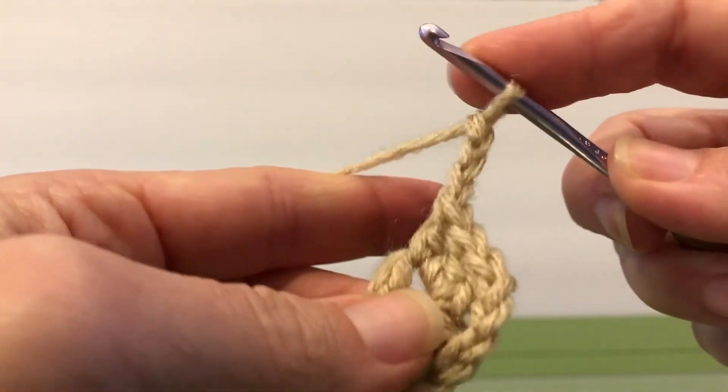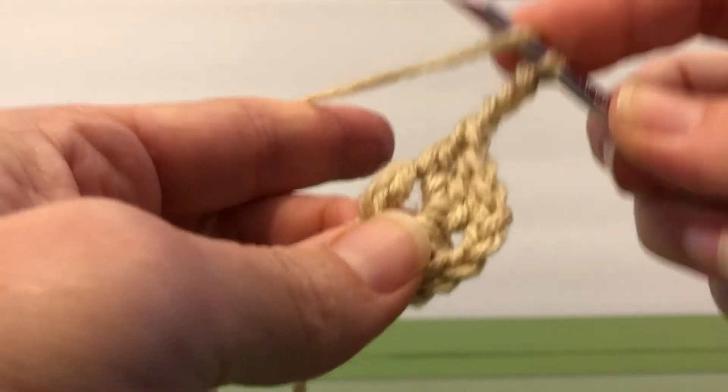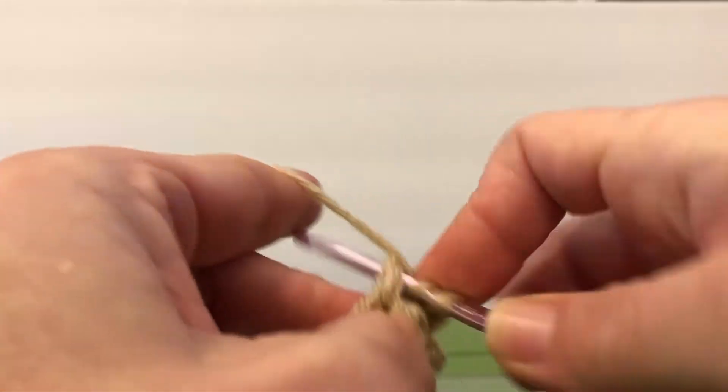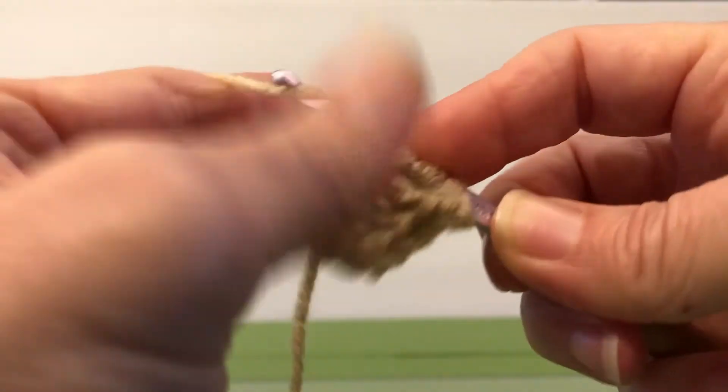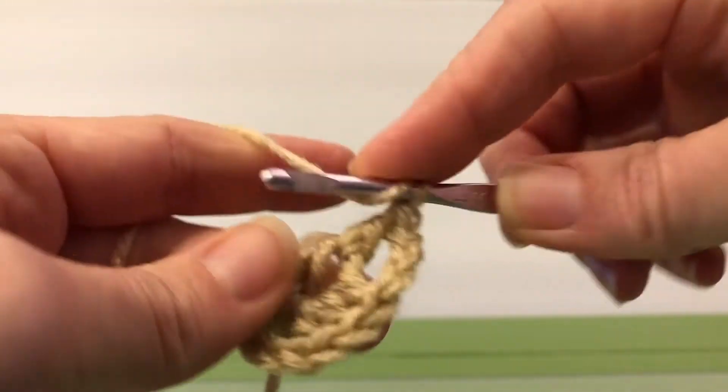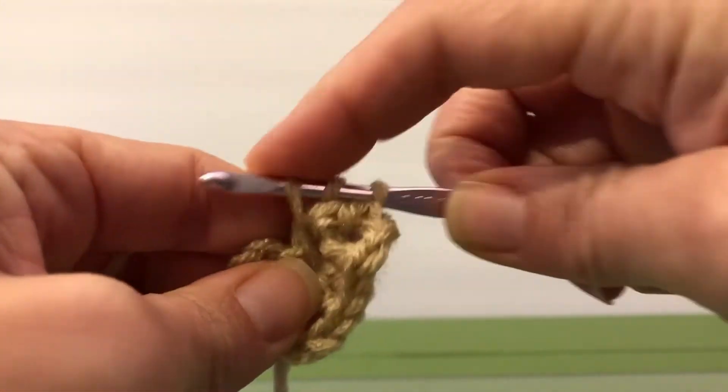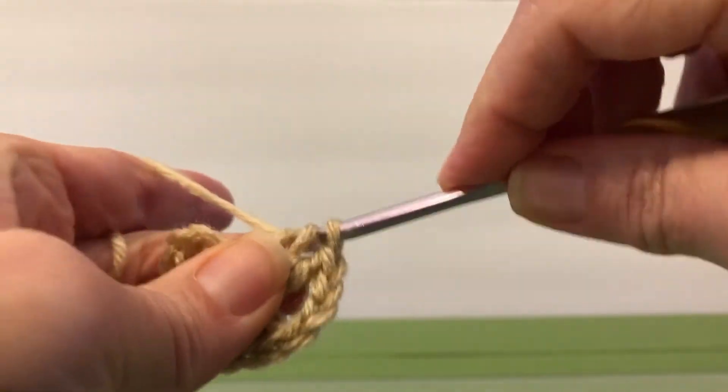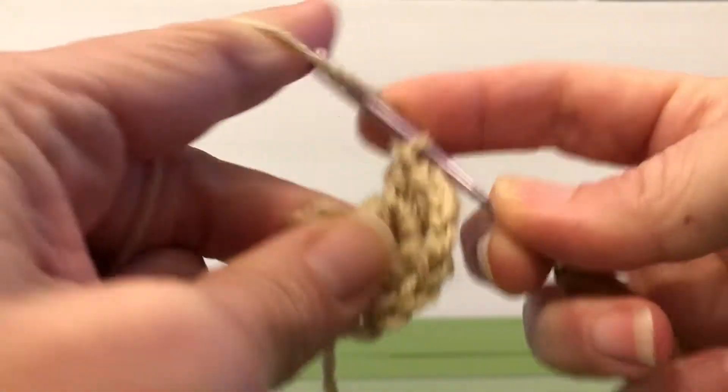Now we're going to go in and do our third granny cluster. So we're going to yarn over, enter, go in, we're going to do three double crochets. There's one, this is two, and this is three.